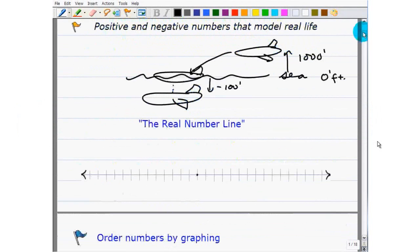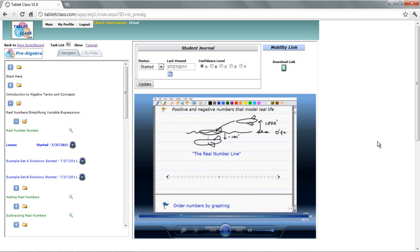Let's take a look at the real number line. The way we model real numbers is something called the real number line.